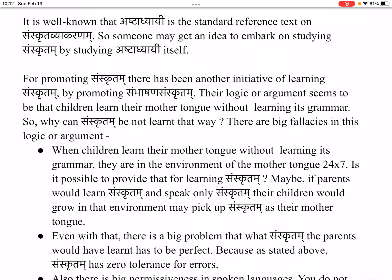When children learn their mother tongue without learning its grammar, they are in the environment of the mother tongue 24 by 7. Is it possible to provide that for learning Saṃskrutam? Maybe, if parents would learn Saṃskrutam and speak only Saṃskrutam, their children would grow in that environment and may pick up Saṃskrutam as their mother tongue. Even with that, there is a big problem: the Saṃskrutam the parents would have learnt has to be perfect, because Saṃskrutam has zero tolerance for errors.